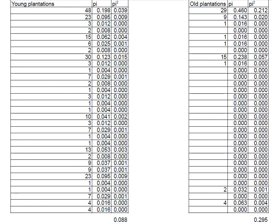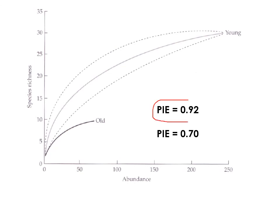We can also calculate Hurlbert's PIE for these samples. PIE for the young plantations is 0.92 — a 92% chance that two randomly pulled beetles are different species. For the old plantations, PIE is 0.70 — a 70% chance. Interestingly, PIE is actually the slope of the rarefaction curve at its origin: 0.92 for young and 0.70 for old. Rarefaction allows us to determine whether sampling effort is influencing our interpretation of differences in diversity.